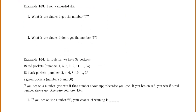I roll a six-sided die with the numbers one, two, three, four, five, six. What is the chance that I get the number six? If there are six sides and there's only a six on one side, then it's one out of six.